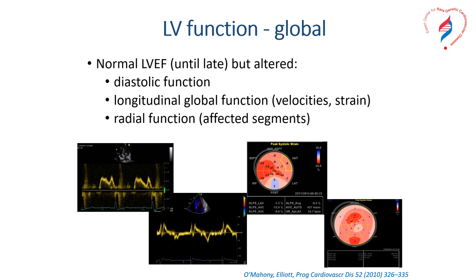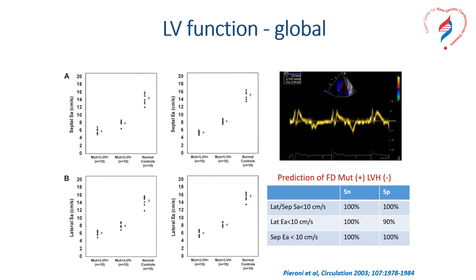Global function of the left ventricle is normal until late, but quite early patients present with diastolic dysfunction, longitudinal global dysfunction as quantified by both velocities and strain, as well as radial dysfunction. This was first shown in a study looking at genotype-positive, phenotype-negative Fabry disease patients who already had annular velocities of less than 10 centimeters per second, with very high sensitivity and specificity.